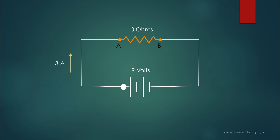Our battery has an EMF of 9V, which means the battery is supplying 9 joules of energy to each coulomb. The journey of each coulomb starts at the positive terminal of the battery and then reaches point A. To travel from point A to point B, each coulomb requires 9 joules of energy. The energy used by each coulomb in moving from point A to point B is known as the potential difference between those two points. Thus, the potential difference between point A and point B is 9V. This potential difference is sometimes also called a voltage drop, which causes heat from the resistance.